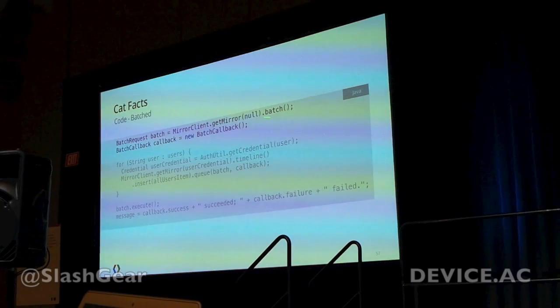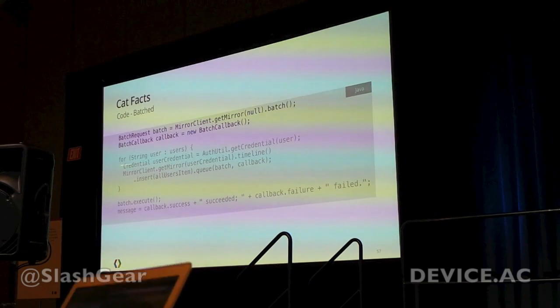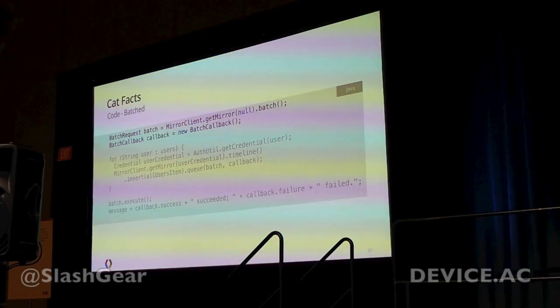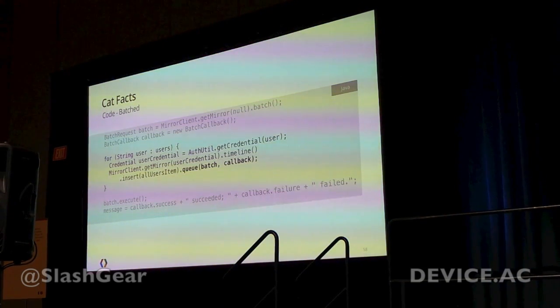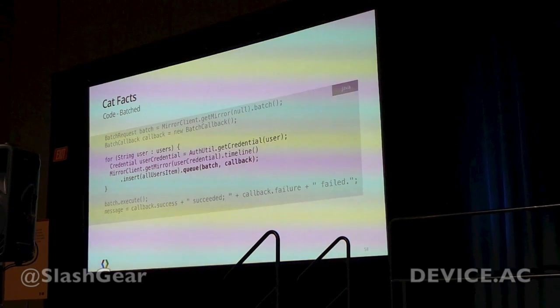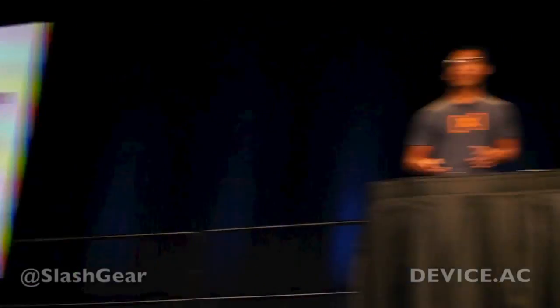Once you're done implementing your class, simply create a batch request from the Mirror service — this is authorized, you don't need to authorize your batch request separately. Create a new callback object and then go through all your users again. Get a credential from the database, same as before. Create a new insert request but don't execute it right now — simply add them to the queue of the batch request. Once you've added all the sub-requests to the batch, execute the batch request and check out the results. That's it — you just saved bandwidth by sending multiple requests into one single request, and with GZIP encoding you might actually save a lot of bandwidth and data.